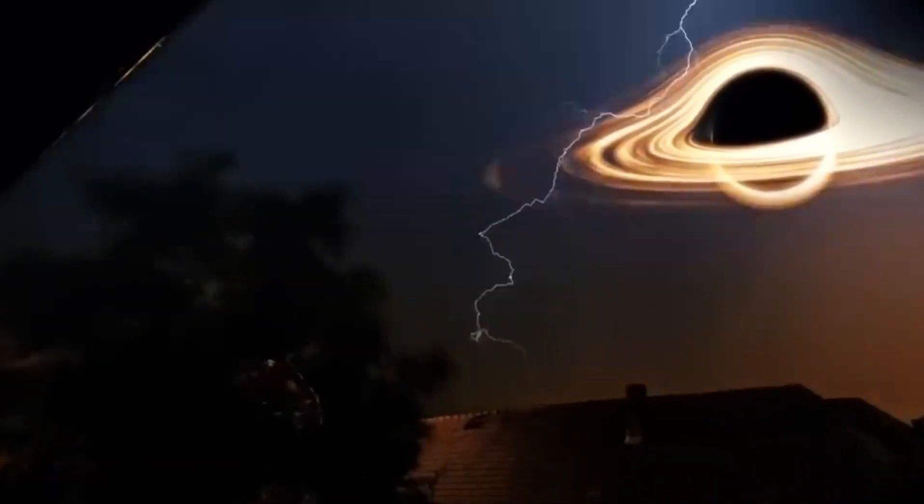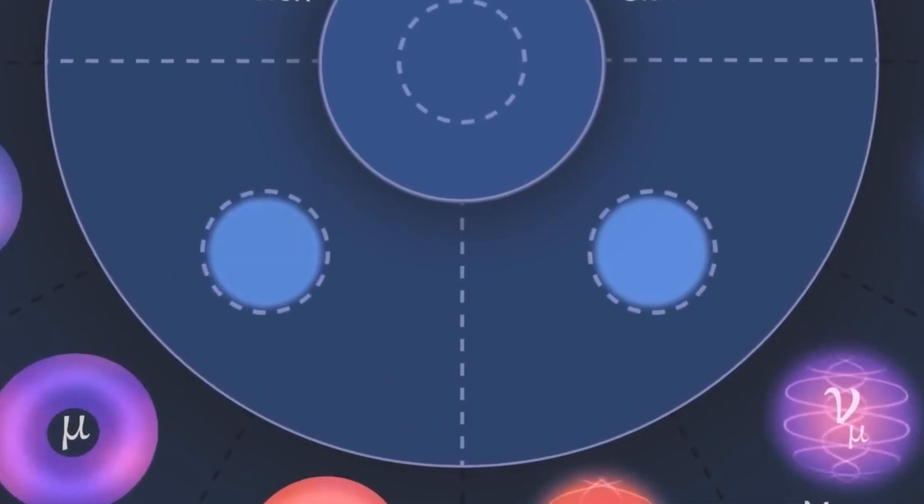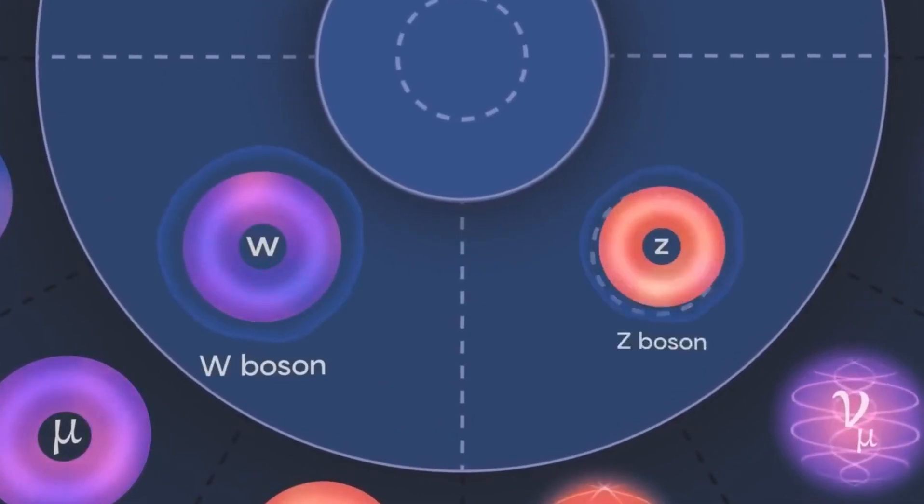The beauty quark, which has an average lifespan of one and a half trillionths of a second, was the subject of this particular anomaly when its decay pattern was different than what scientists predicted based on the standard model.